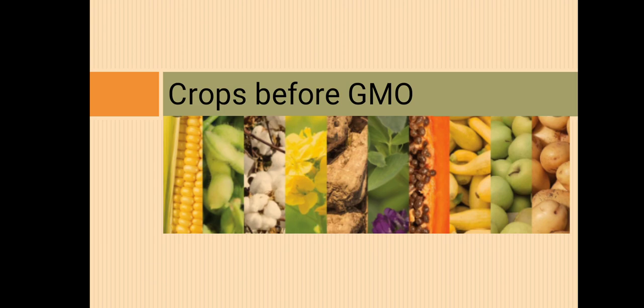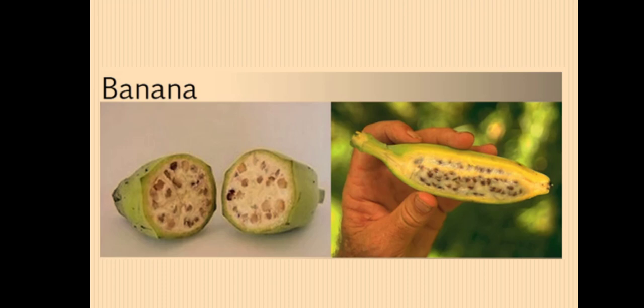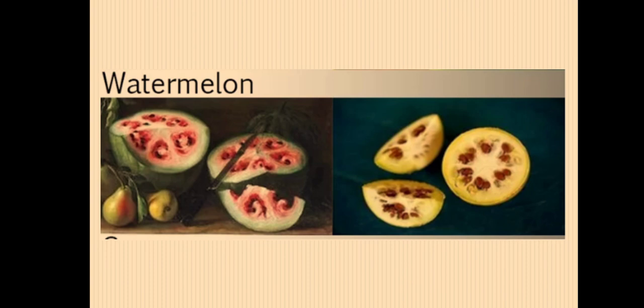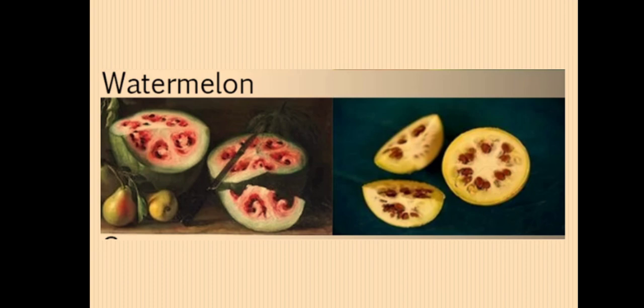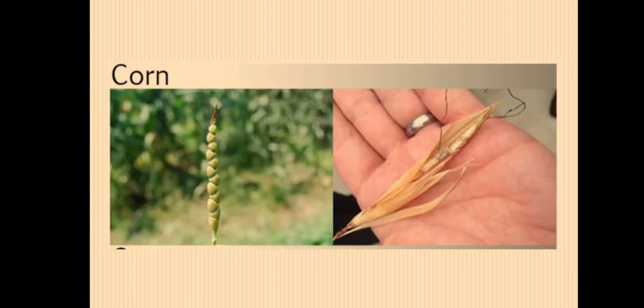First, what was life like hundreds of years ago, before GMO was realized and invented? This is banana — before, there were hundreds of types or varieties of banana, but due to geographic location and climate, not all of them could feed and sustain the entire population. This is watermelon — not all watermelons could be eaten. Carrots — you've noticed that native vegetables are a little bit smaller than the imported and well-bred ones.